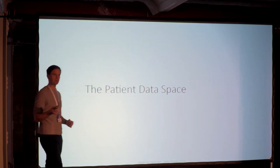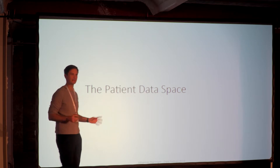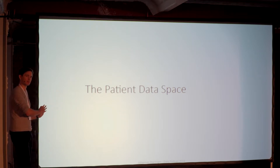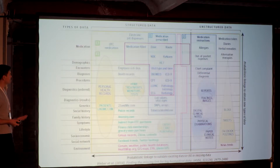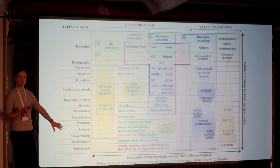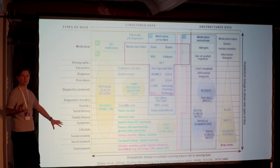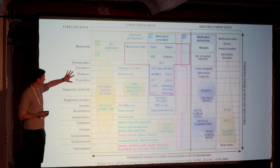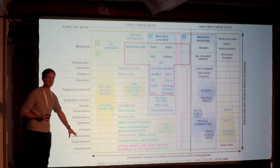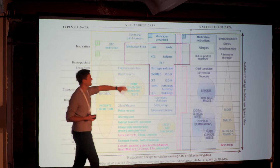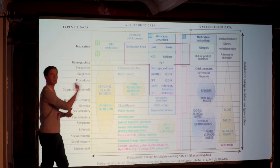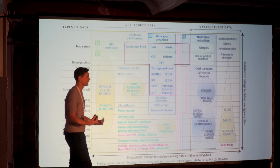Let's look a bit into the patient data space. On the left-hand side are different types of data that we as patients generate, not only in the healthcare system but also outside of it — from medication, diagnosis, and procedures, to genetics, social and family history, socioeconomic issues, and environmental factors. The left and right sides of the graphic represent structured versus unstructured data. We have databases with all that structured information, but we have loads of free-form text too, from which we also want to extract information.